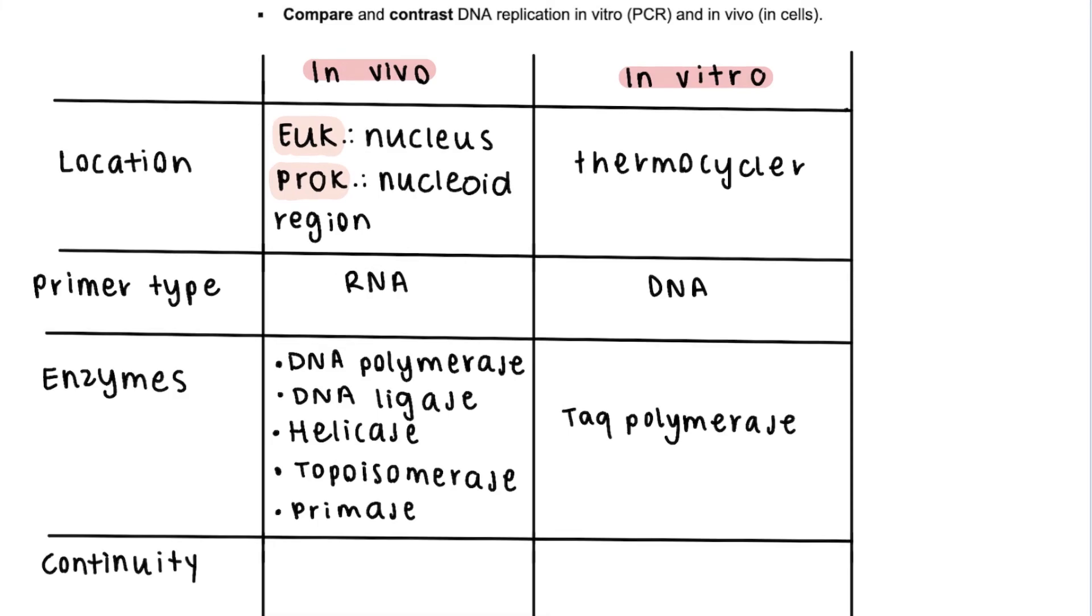In terms of continuity, there is unproblematic continuous replication in the leading strand in vivo. And in the lagging strand, there is segmented replication that is later solved. On the other hand, in PCR, replication is continuous everywhere. Now we have covered the final learning objective for DNA replication.